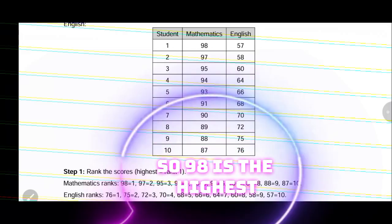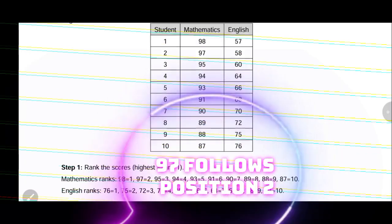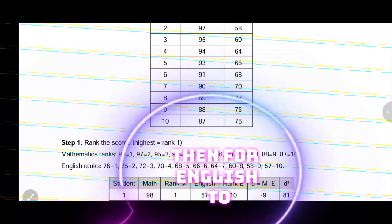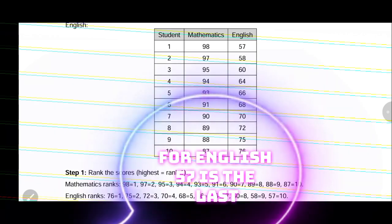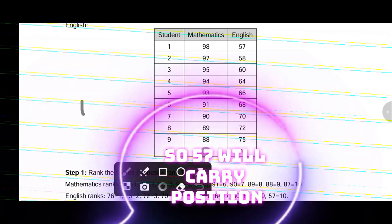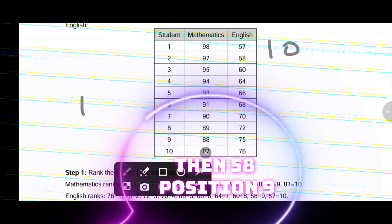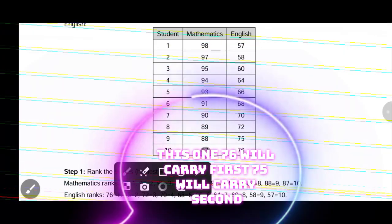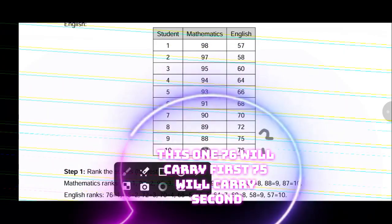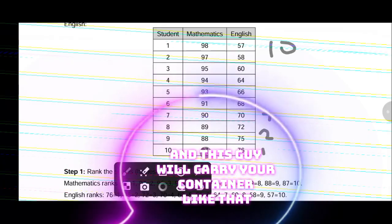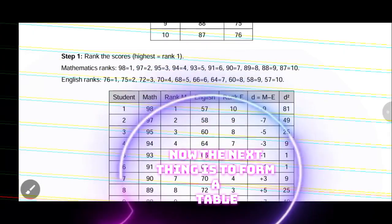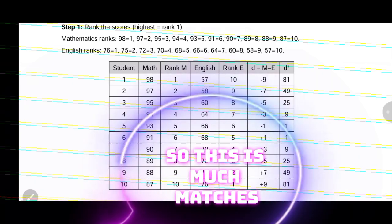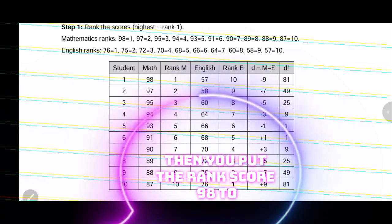Since the Mathematics scores are ordered from highest to lowest, you assign ranks directly: 98 gets position 1, 97 gets position 2, 95 gets position 3, 94 gets position 4, and so on. For English, 57 is the lowest so it carries position 10, 58 carries position 9, 60 carries the next position, and so on. The highest English score, 76, carries position 1, 75 carries position 2, 72 carries position 3, and you continue like that. Then form a table with scores and ranks side by side.